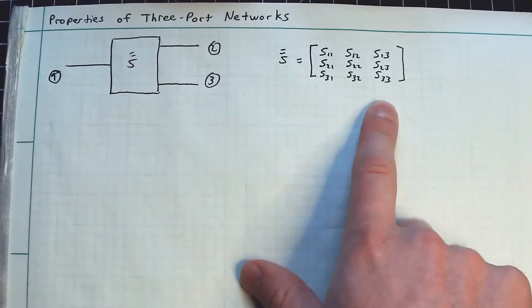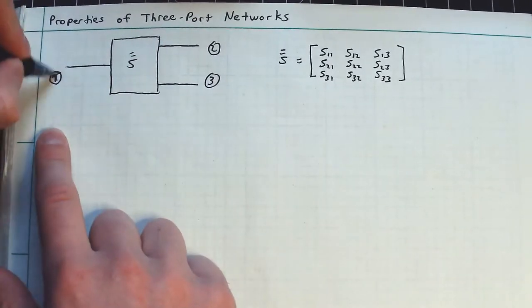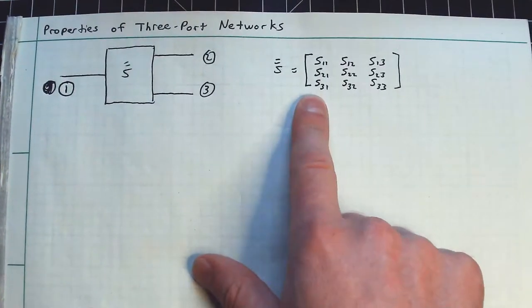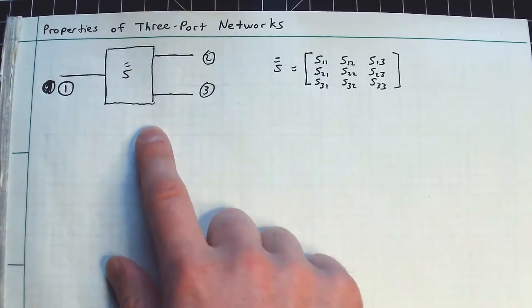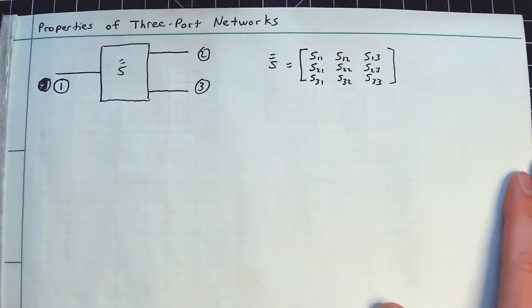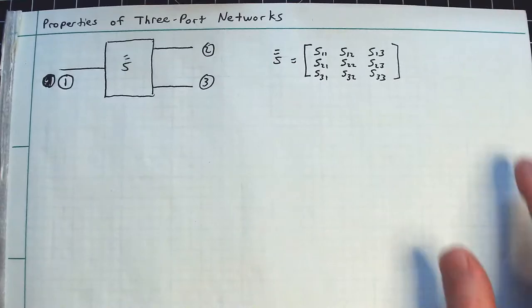And there's some corresponding scattering matrix associated. So when we're constructing a microwave network, there are three big properties we usually like to impose or see imposed on a network.